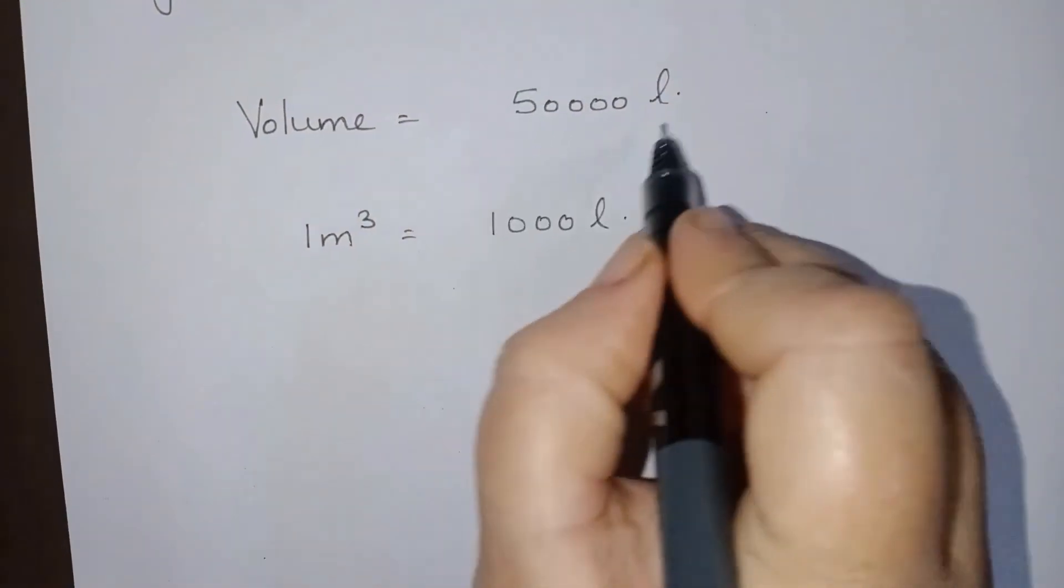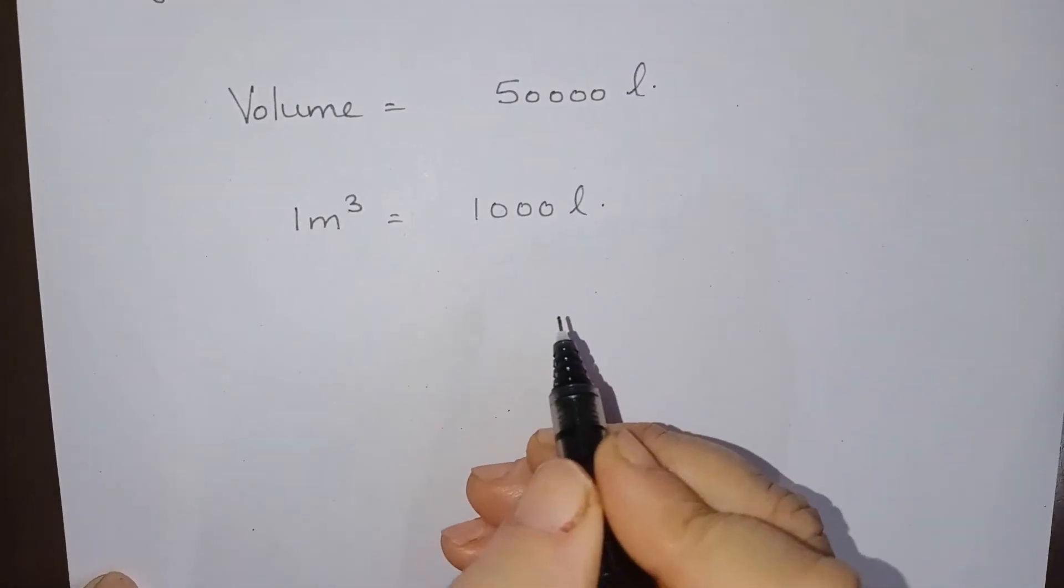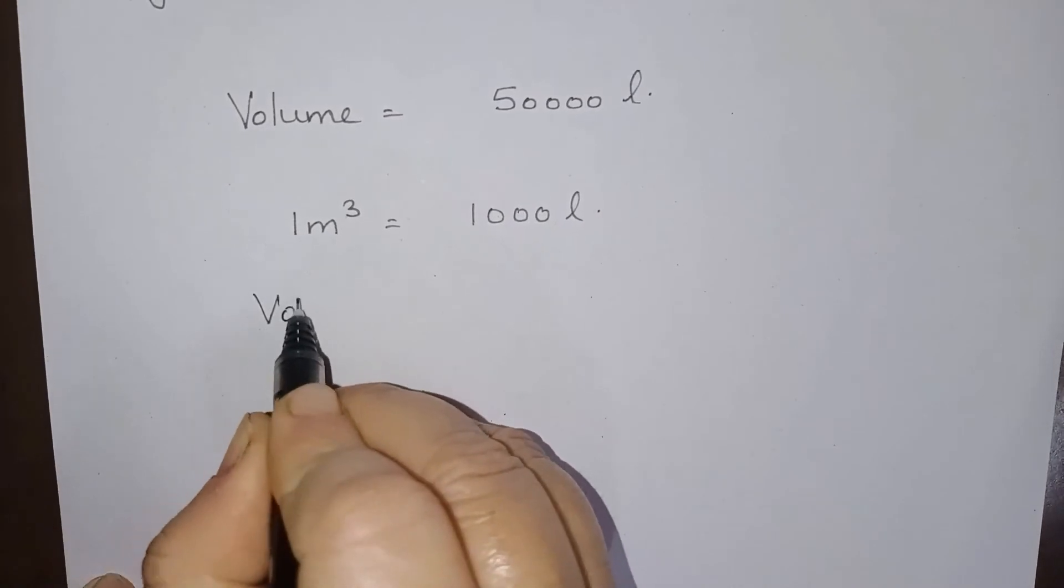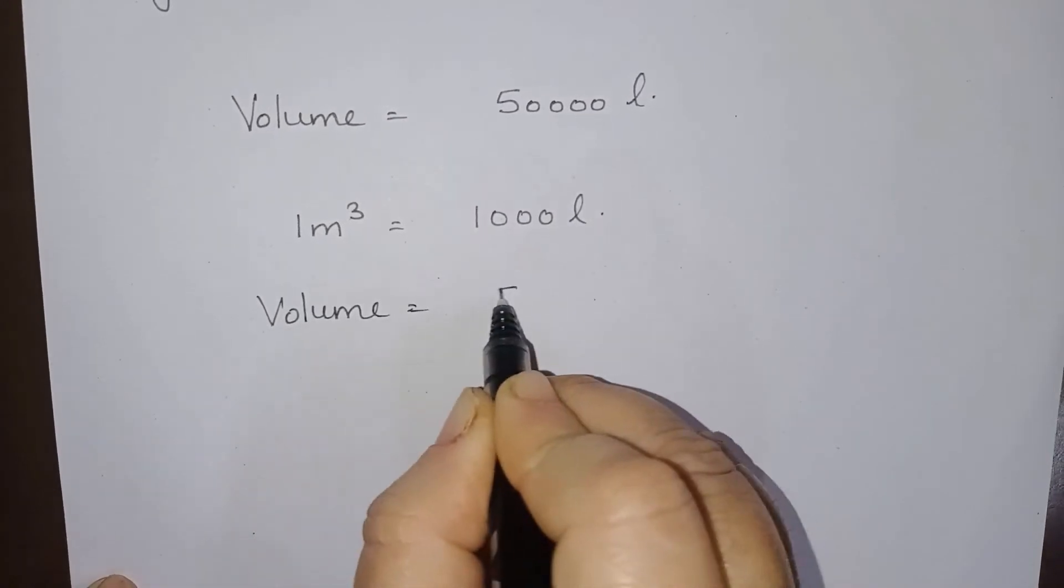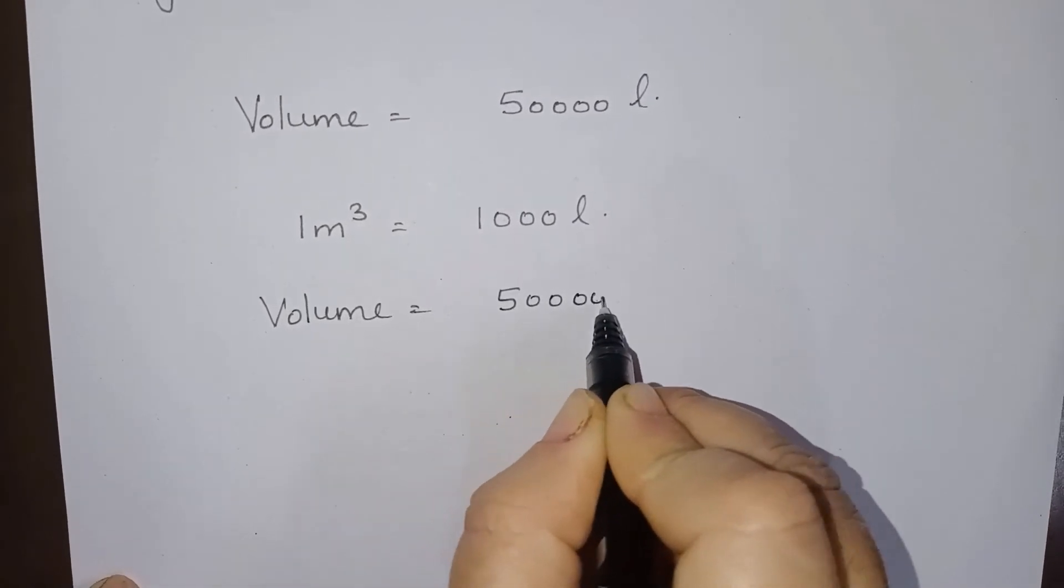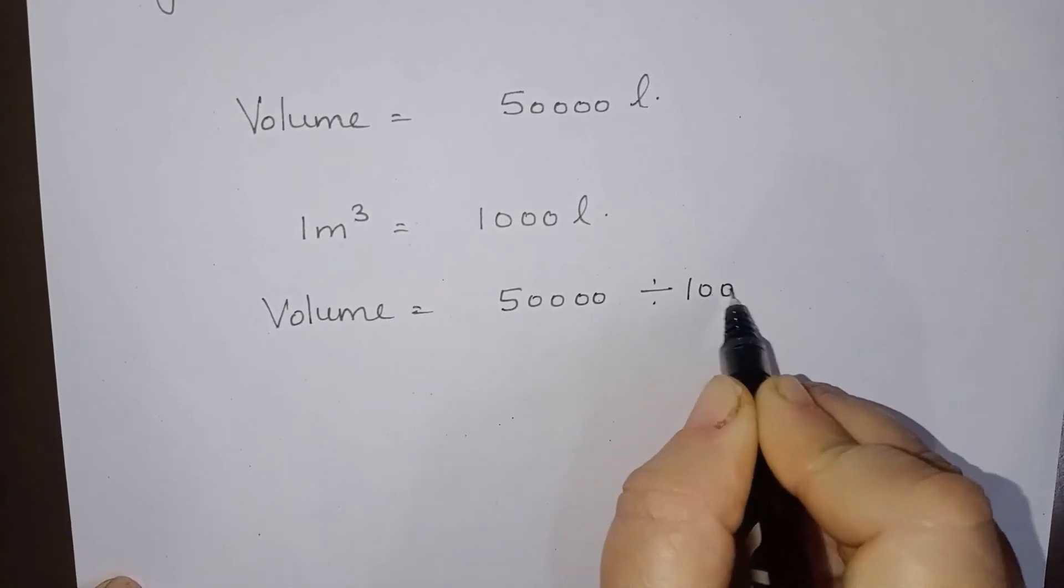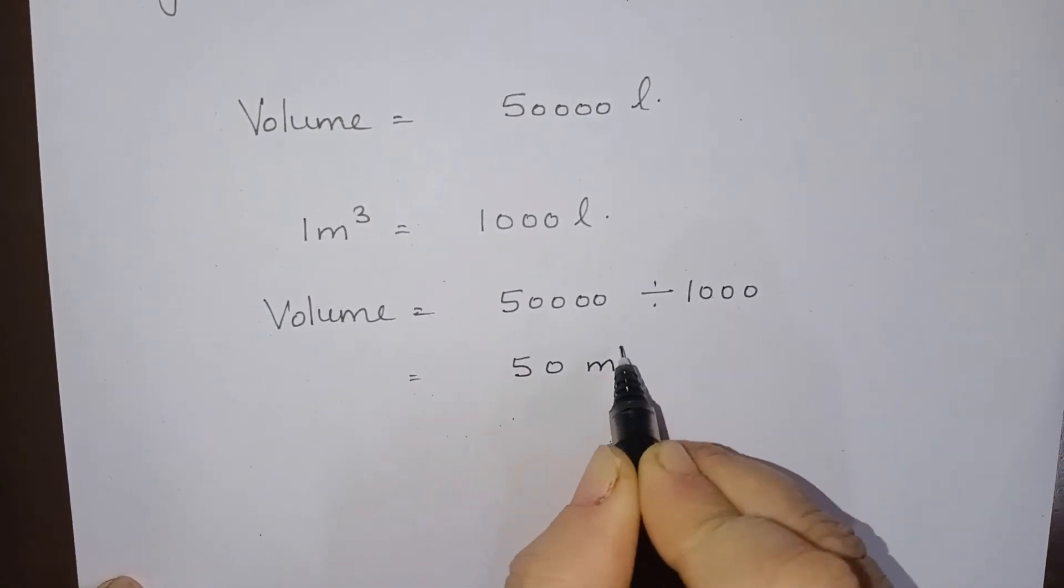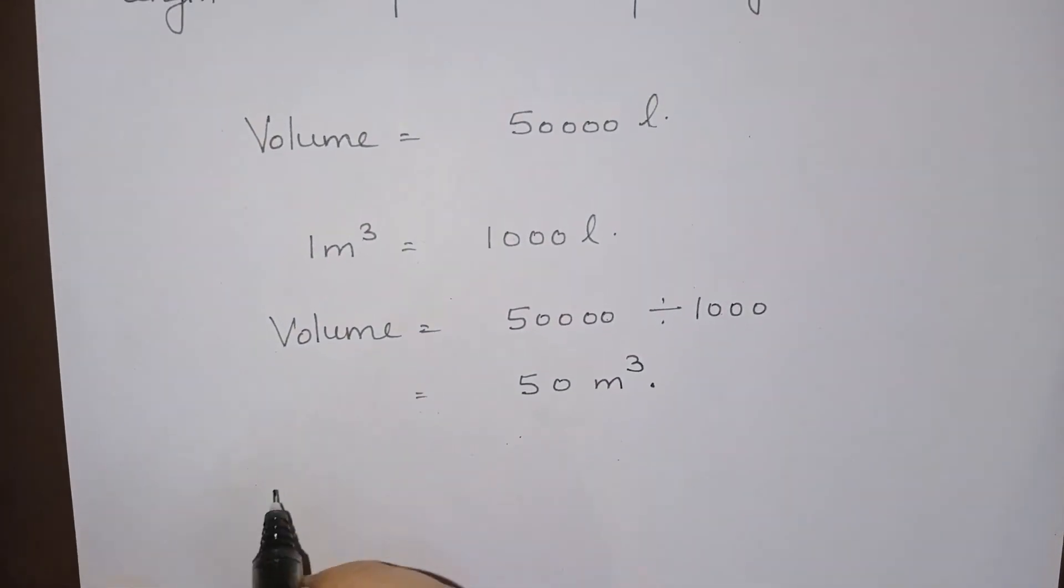So to convert 50,000 litres to metre cube, we will divide it by 1000. So we will write: volume will become 50,000 divided by 1000, so it will be equal to 50 metre cube. This is the volume.